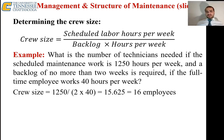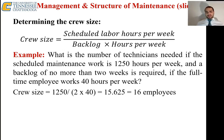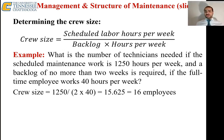Example: What is the number of technicians needed if the scheduled maintenance work is 1,250 hours per week and a backlog of no more than two weeks is required, with full-time employees working 40 hours per week? The calculation is 1,250 divided by (2 weeks × 40 hours/week/employee), which gives 15.625 — meaning you need 16 employees. Your crew size needs to be 16 persons.